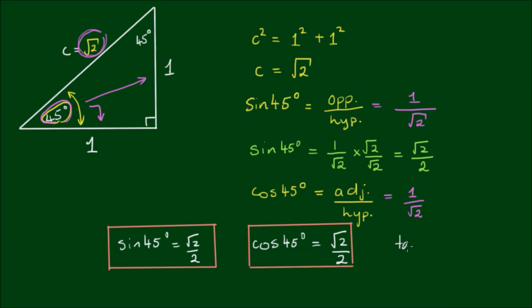What about the tangent of 45 degrees? The tangent is simply defined as the opposite side divided by the adjacent side. So if these are the same value, then that ratio will simply be equal to 1. So tan of 45 degrees is equal to 1.